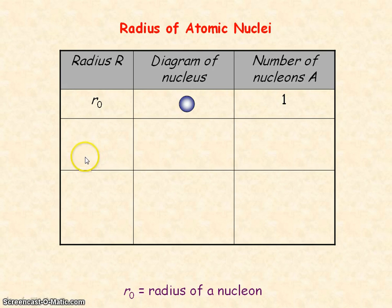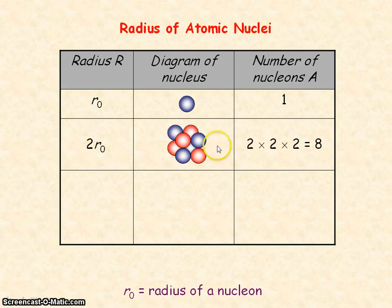When the nucleus has a radius of 2R0, then the nucleus will have 2 by 2 by 2 nucleons, that is 8 nucleons.